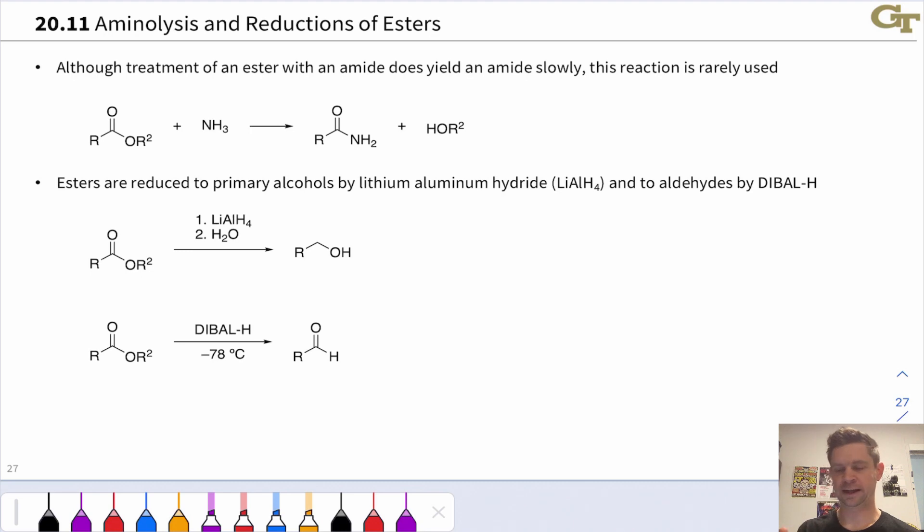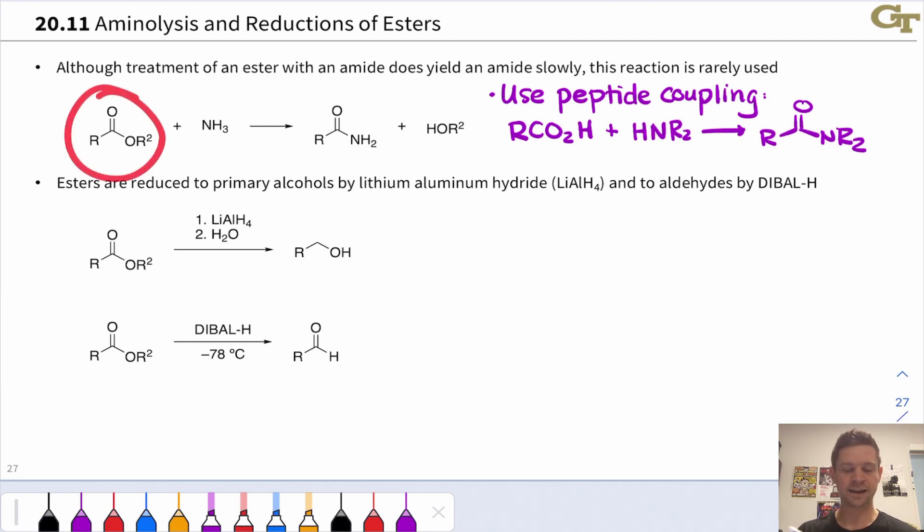It is possible, at least theoretically, to convert an ester into an amide, since the amine nucleophile is a better nucleophile than the alcohol product. However, this reaction is rarely used in practice because it's much easier to start with a carboxylic acid and use peptide coupling to synthesize an amide. So it's actually easier and sometimes even higher yielding to convert the ester back to a carboxylic acid and then use peptide coupling with an amine nucleophile to get the amide. This is not a common reaction, the synthesis of amides from esters.